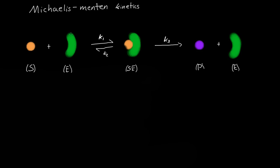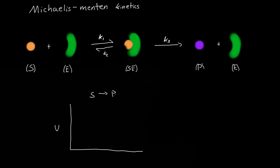Now let's say we have a limited number of enzymes — let's say a hundred enzymes per liter. If the substrate concentration is zero, then no substrate has gone to product, so the velocity is zero.